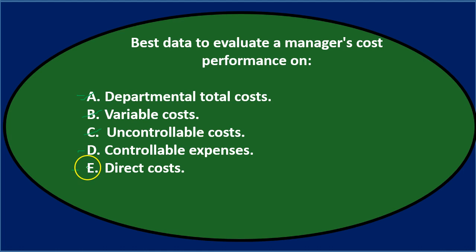So it's not A. Between D and E — direct costs tend to be controllable, but not necessarily. We're looking for what is controllable, because that's what we evaluate performance on: you have control over this, so this is what we're evaluating you on. Final answer: D, controllable expenses — controllable costs.